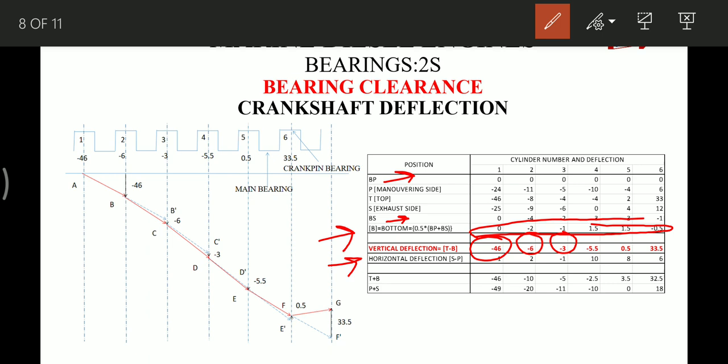What I read was T plus B and P plus S, that is top position reading and bottom position reading summation will be equal to starboard side plus port side readings. The summation will be almost equal - T plus B will be approximately equal to P plus S. But I don't know whether this is correct, but it is given in one of the websites on the net.